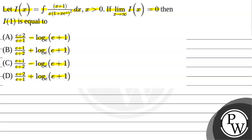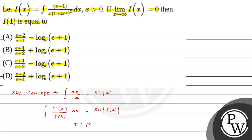Before solving the question, we will talk about the key concept upon which we can solve the problem. The integration of dx/x equals ln|x|. Also, if we have f'(x)/f(x) and need to integrate it, the answer is ln|f(x)|. That is, we substitute t = f(x). Using this concept, we will solve the problem.